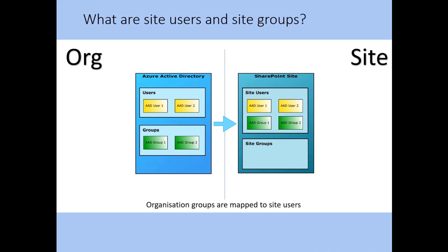So what are SharePoint site users and site groups? We have two users, AAD User 1 and AAD User 2, along with two groups, AAD Group 1 and AAD Group 2. These same organization users and groups are available in the SharePoint site. But once the site needs to refer to a user or group, it maintains its own list of site users mapped from those Azure AD security principles. Importantly, Azure AD security groups are mapped to a SharePoint site as site users, not site groups. SharePoint site groups are created and managed on the SharePoint site, and site users — including those mapped AD groups — can be assigned as members of a site group.